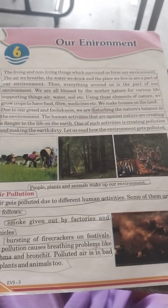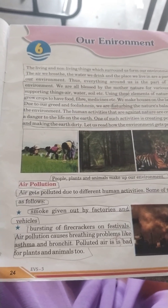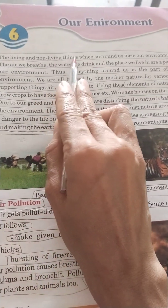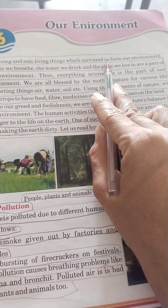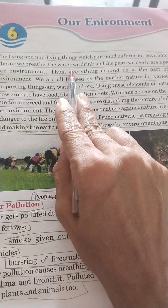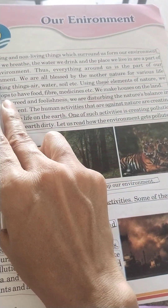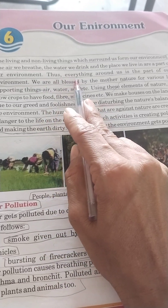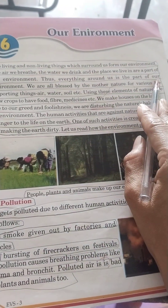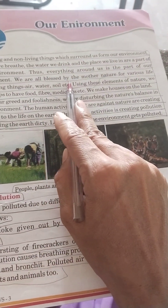Students, open your EBS textbook, 3rd class, 6th lesson: Our Environment, page number 24. The living and non-living things which surround us form our environment. The air we breathe, the water we drink, and the place we live in are part of our environment. Everything around us is part of our environment. We are all blessed by mother nature.